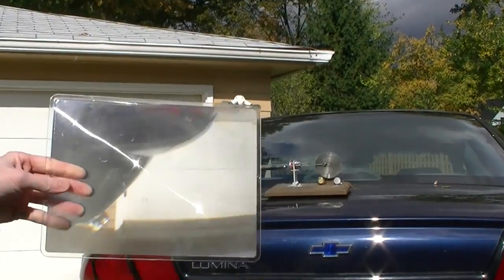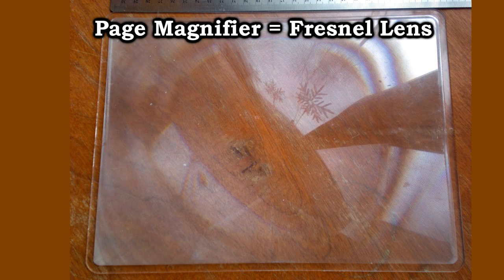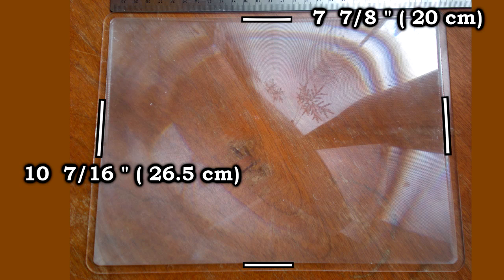The Fresnel lens I use for solar power I got from an office supply store. It's known as a page magnifier. It's about 11 inches by eight and one quarter inches but the actual magnifying portion is ten and seven sixteenths by seven and seven eighths.